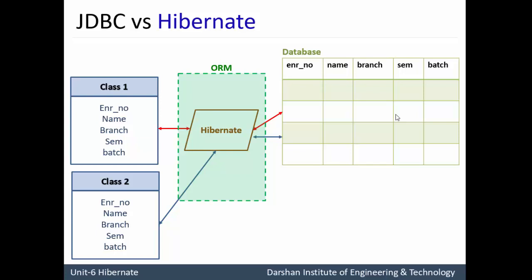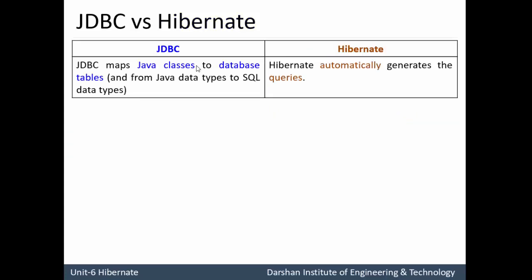With Hibernate it is much easier to convert object oriented programming to a relational database using object relational mapping. Now, the differences between JDBC and Hibernate: Difference one — JDBC maps Java classes to database tables, but Hibernate automatically generates the SQL query. If you are using different databases with JDBC, the query syntax for each database may be different, and this has to be handled by the developer. While in Hibernate, this is not the case.